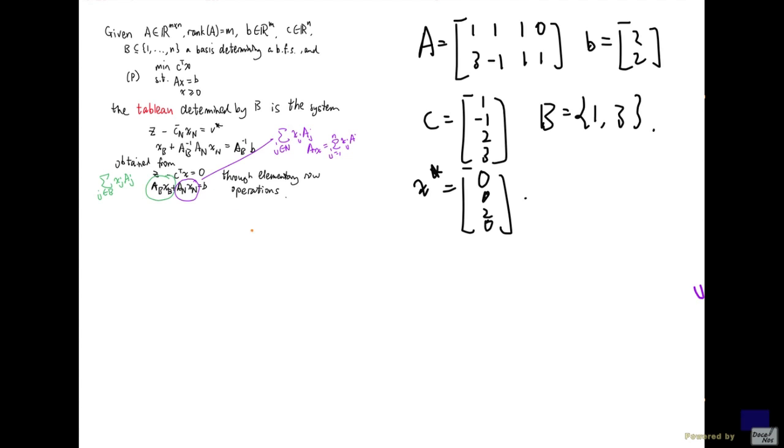Let's try to write down the tableau determined by the basis B. And we'll start with writing down the z row. In this case, I have minus x_1 plus x_2 minus 2x_3 minus 3x_4 equal to 0. And then the constraints. So that's the system that I'm starting with.